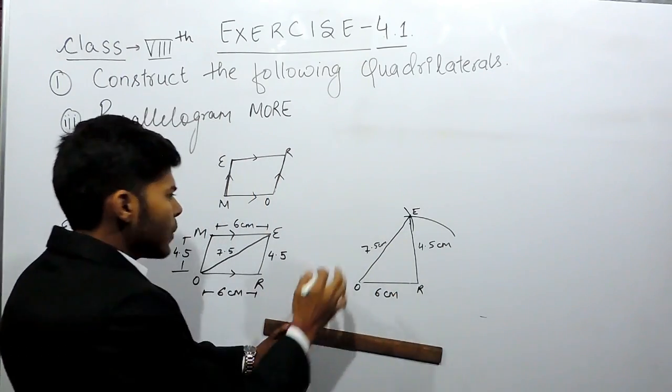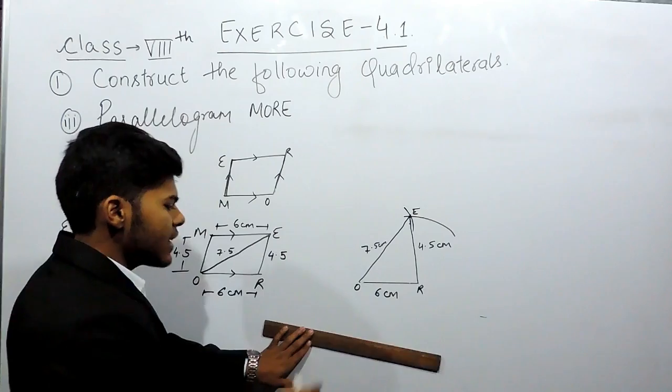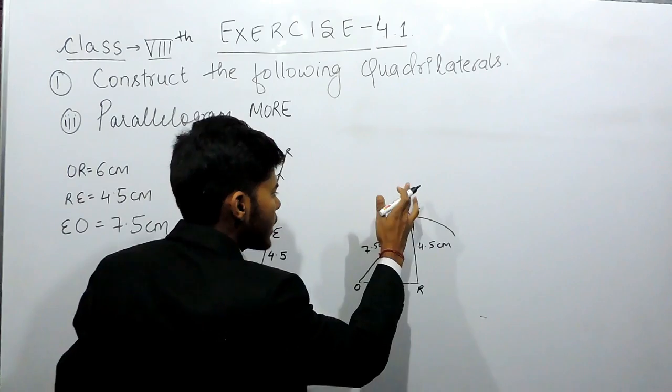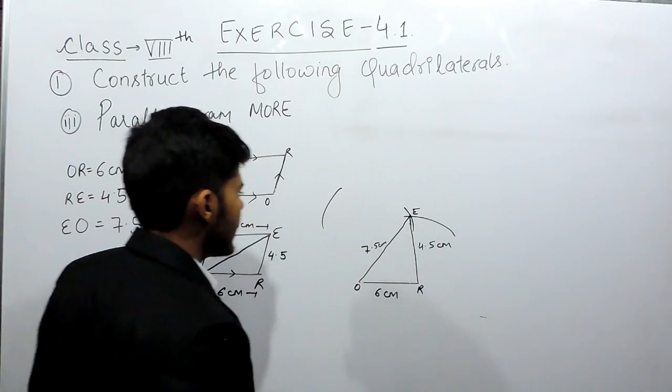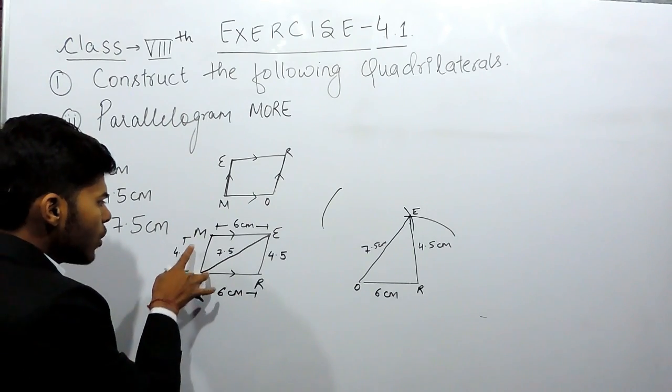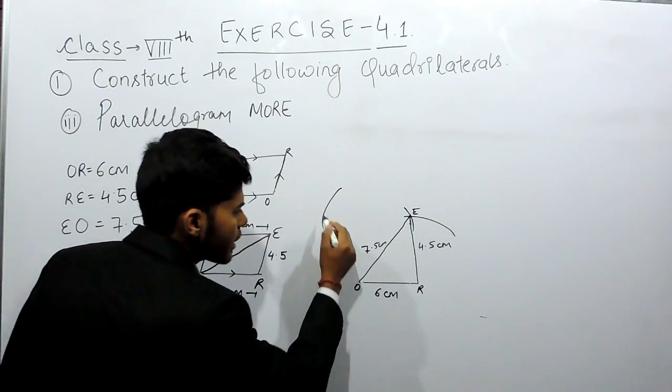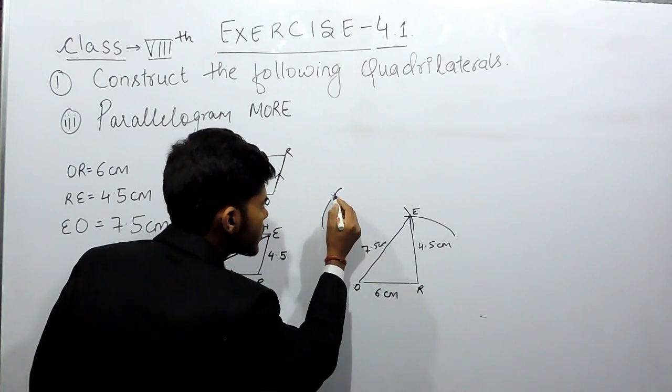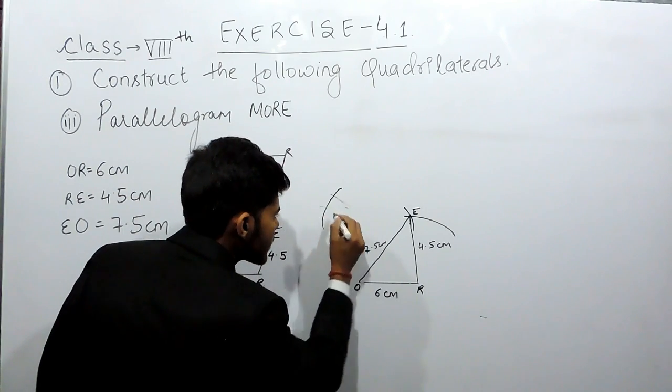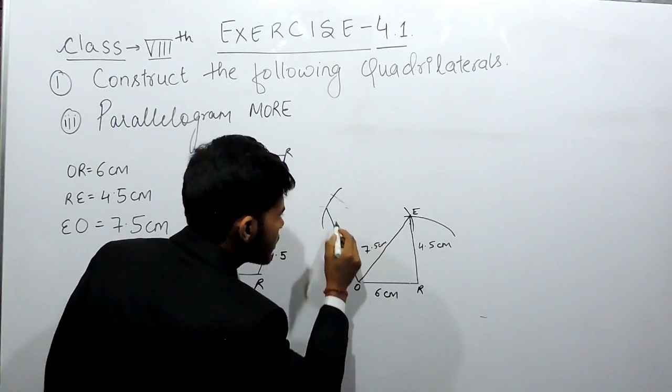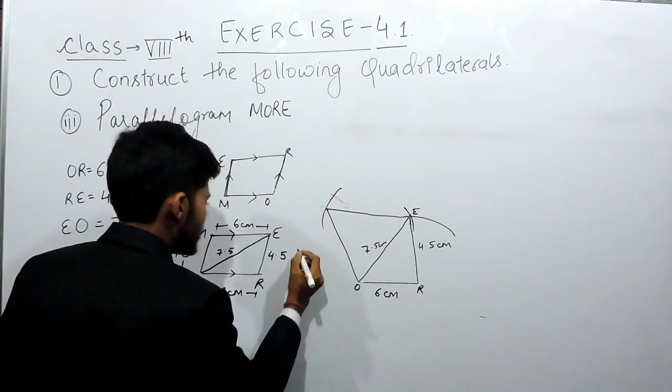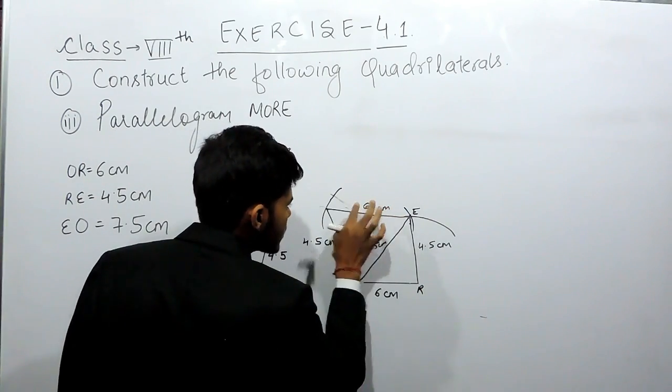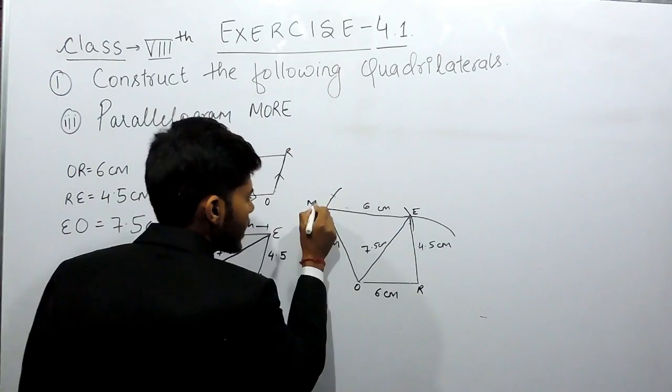Now after this, we keep the compass at point E and cut an arc of 6 centimeters. Again we'll measure it at 6 centimeters. Now we'll keep the compass here and cut an arc of 6 centimeters, and from point O we'll cut an arc of 4.5 centimeters. Supposingly like this. So it will be 4.5 centimeters, 6 centimeters. And this will be point M.